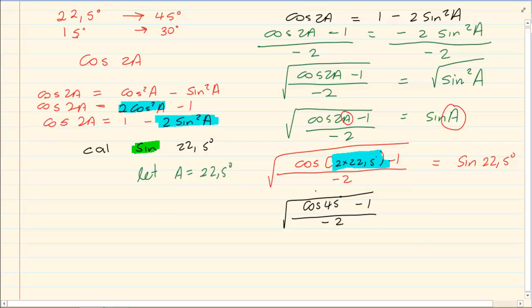At this stage they just want to see that we understand that I have root of 2 over 2 minus 1 all over minus 2 rooted.